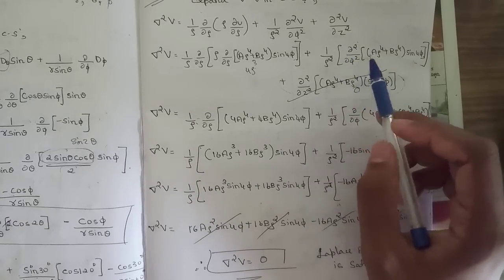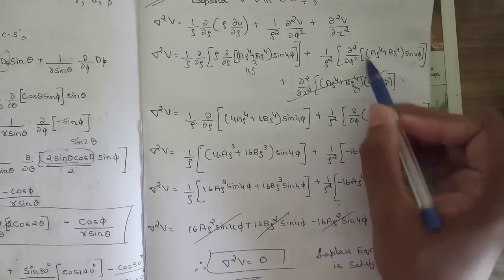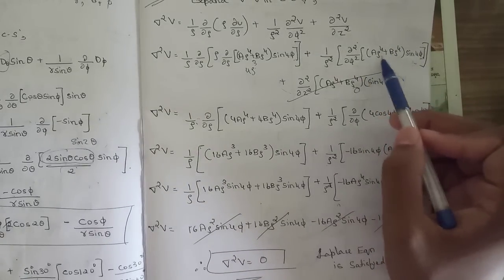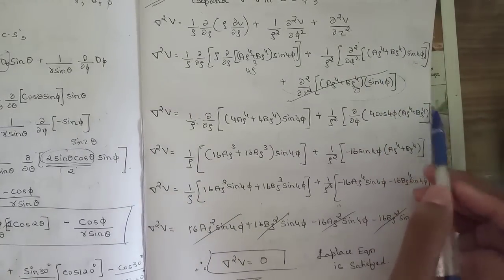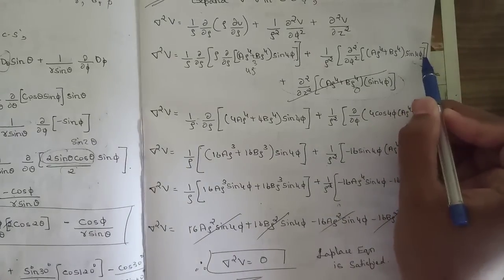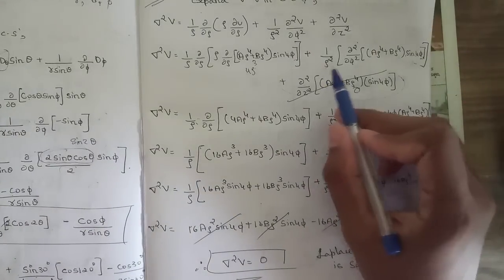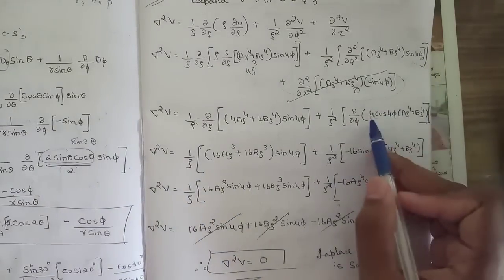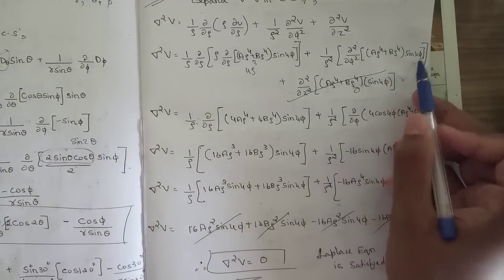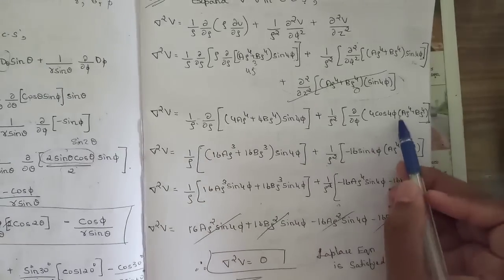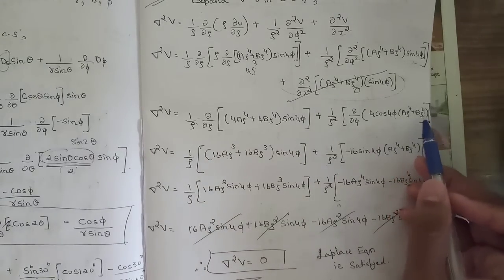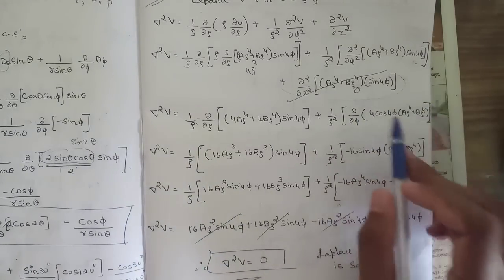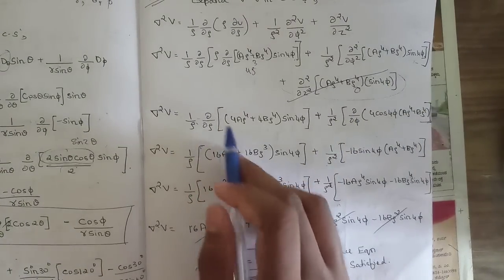First differentiation with respect to φ: aρ⁴ + bρ⁴ is kept constant, and the derivative of sin4φ is 4cos4φ. So we get 4cos4φ · (aρ⁴ + bρ⁴).